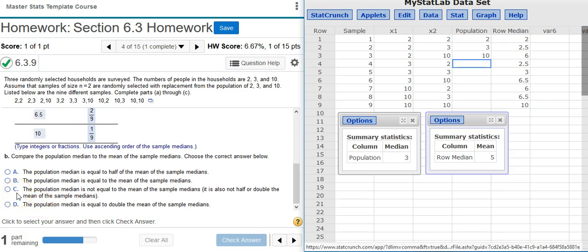Answer option C says the population median is not equal to the mean of the sample medians. It is also not half or double the mean of the sample medians. That sounds right, but let's check answer option D just to make sure.